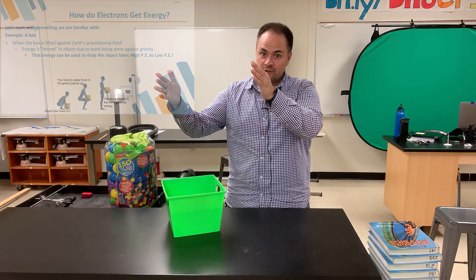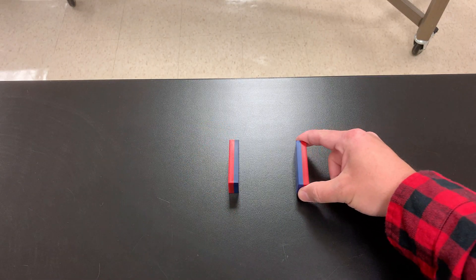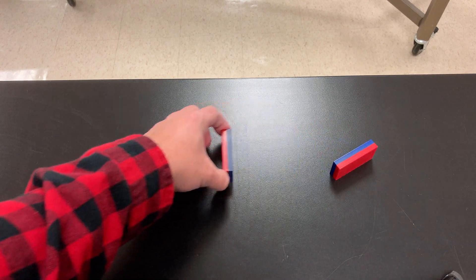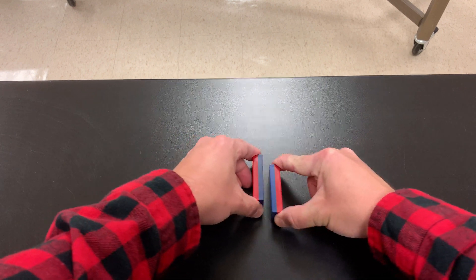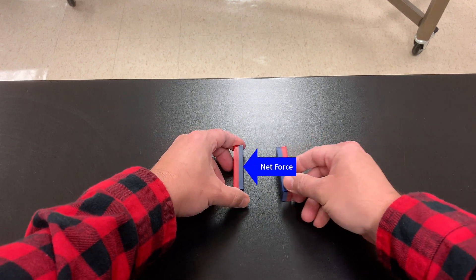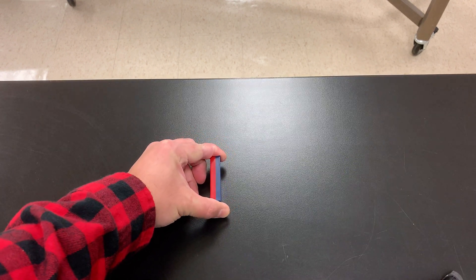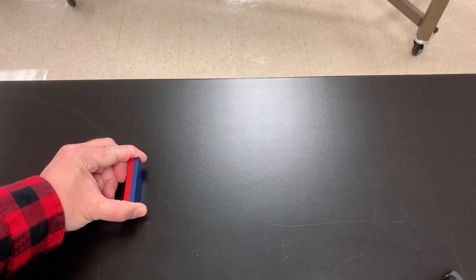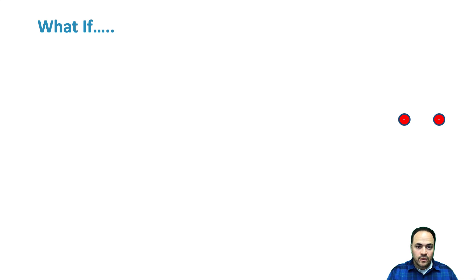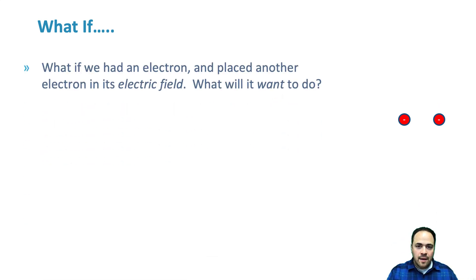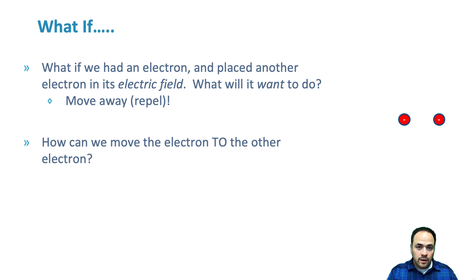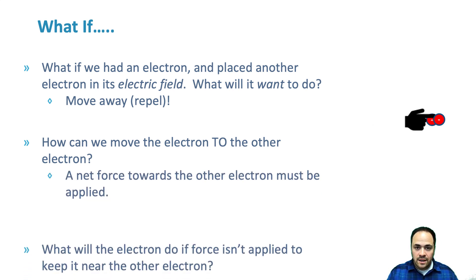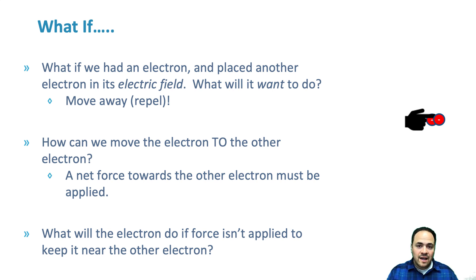Magnets have fields too. If I have two magnets with the same poles pointed toward each other, they repel. To bring them together I must push against their magnetic fields, and in doing so I store magnetic potential energy in them — which becomes kinetic energy when I let go. Just like magnets, charges have fields too: electric fields. If I place one electron within another electron's electric field, they repel, and to push them together I must apply a net force against that field.